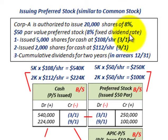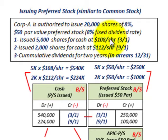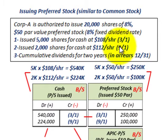The eight percent represents a fixed dividend rate. We're going to have two issue dates. First, we're going to issue five thousand shares for cash at a hundred and eight dollars per share on March 1st. Then we'll issue two thousand shares for cash at a hundred and twelve dollars per share on September 1st.